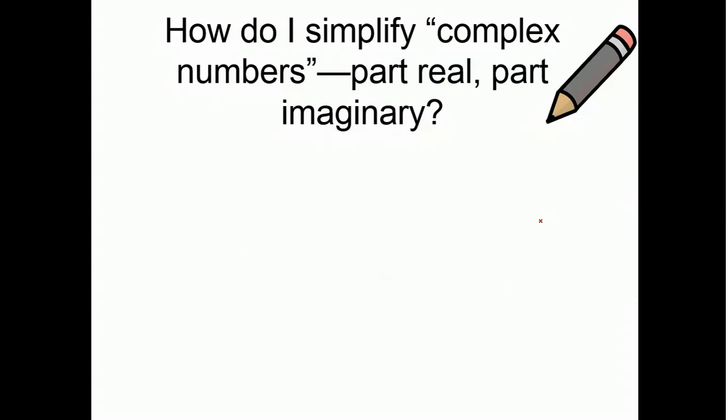Now, how do you simplify complex numbers? You're going to want to write it as part real, part imaginary. So, you're going to want to write the number first and then the part with the i second. So, this one, I have i times quantity 3 plus i.